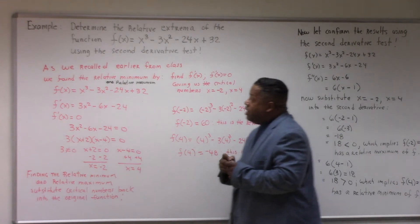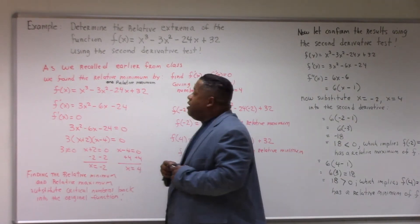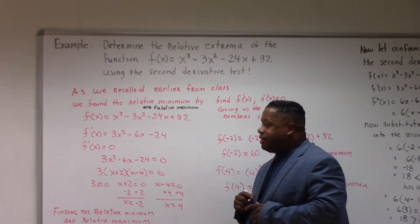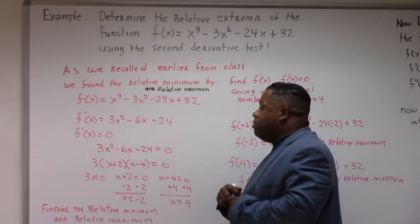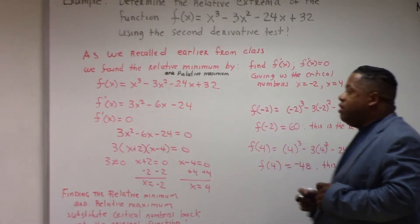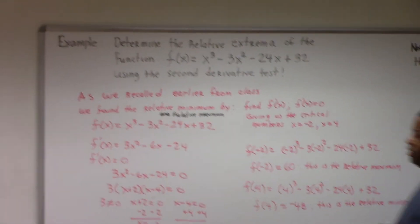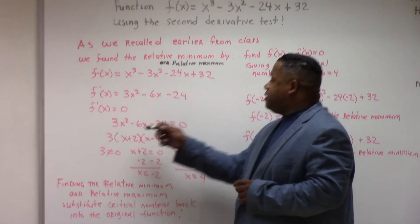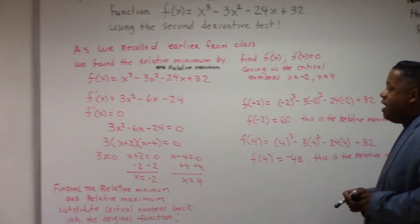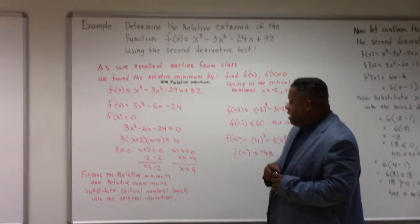Let me show you how we did that. We write the function out and take the first derivative, which is 3x squared minus 6x minus 24. Then we set f prime of x equal to zero, factored this function, and solved for x. We set each factor expression equal to zero and solved for x, coming up with x equal to negative two and x equal to four.